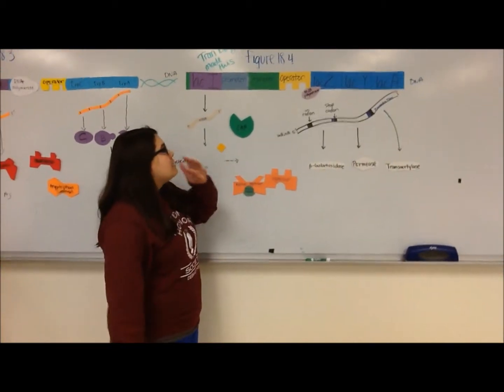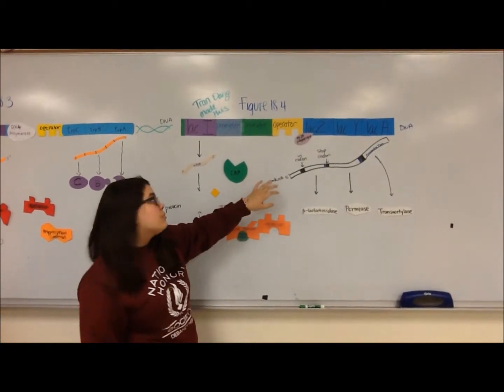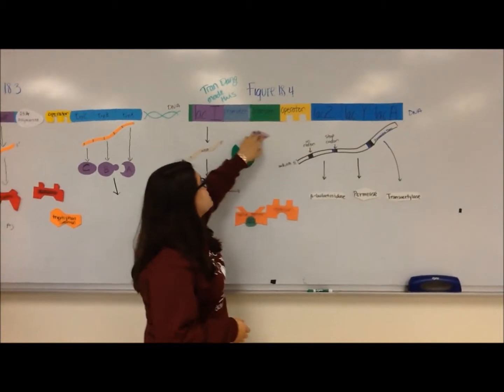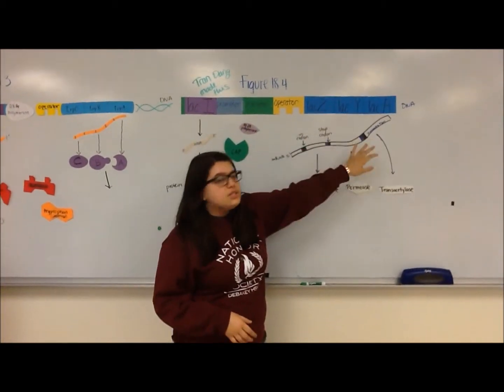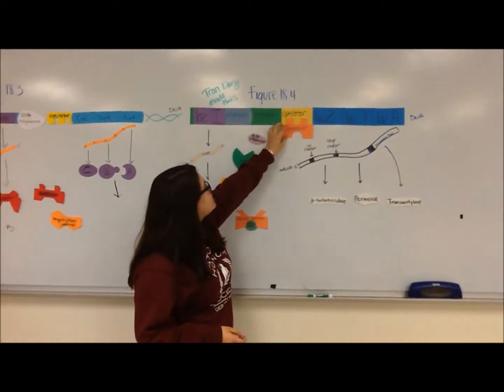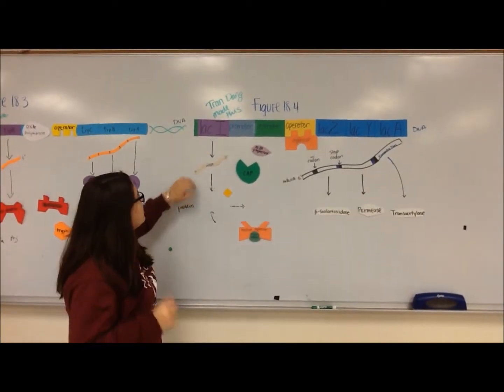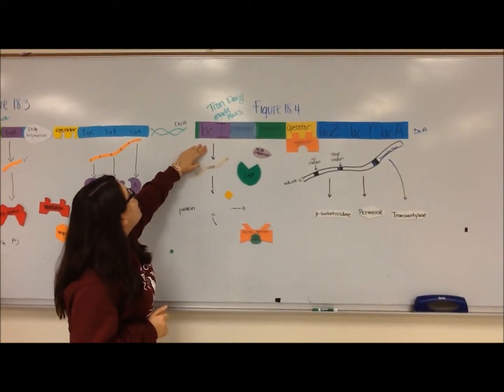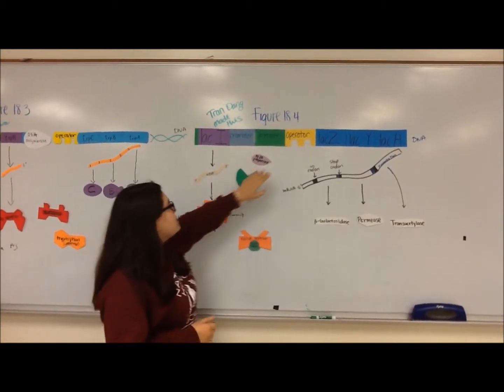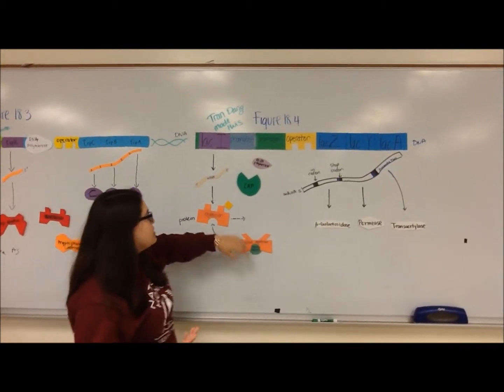Another example of negative gene regulation is the lac operon, which is an inducible operon. This means the operon is always turned off, preventing RNA polymerase from transcribing these genes. The operon is always turned off because the repressor is always in its active state. The lac regulatory gene codes for this activated repressor that attaches to the operator and turns it off.